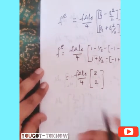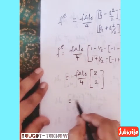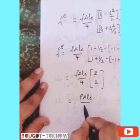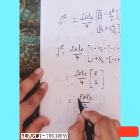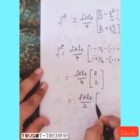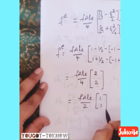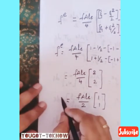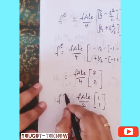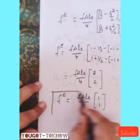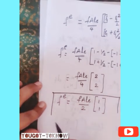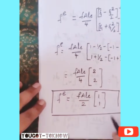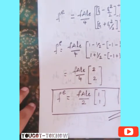Therefore, the load vector due to body force is: fe equals (F times A times le by 2) times [1, 1]. This is the body force load vector for a bar element.